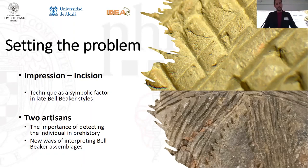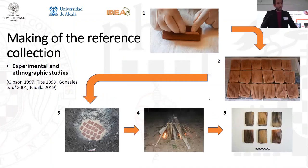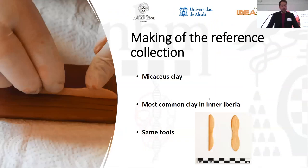In order to solve the problems and verify the initial hypothesis, we proposed a project that combines experimental archaeology, deep learning, and computer vision techniques, which have given good results in other areas of archaeological research. We proposed a sample with four groups of variables with 18 slabs each, yielding a total sample of 72 slabs. The characteristics of each group were defined by the technique used in their creation and the artisans who made them. The slabs were made with mica-based clay that shines very brightly with the incidence of light. This type of clay is very common in Inner Iberia.